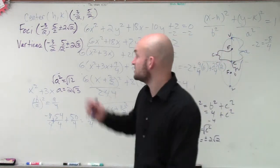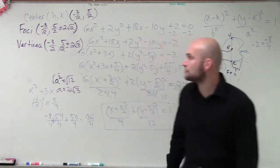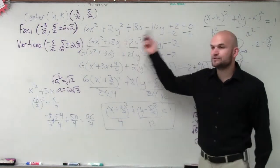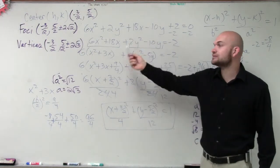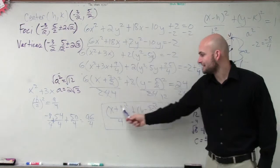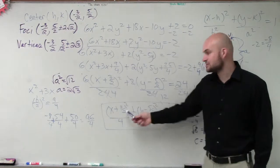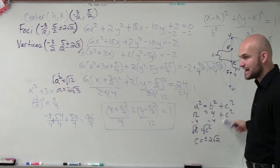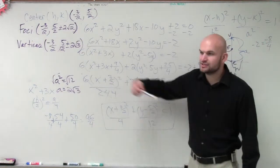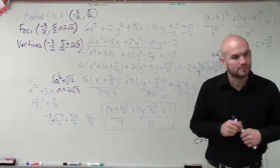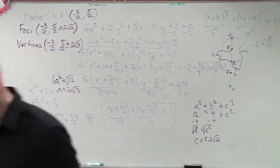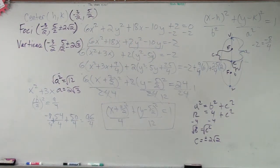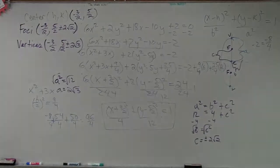That's how you find the center, foci, and vertices. Just remember, guys: if you're given something in this general form, you have to complete the square to get it into standard form. Once you have it in standard form, you know what A and B are. You can use that to find C, and you know what the center is. That's all you have to do.